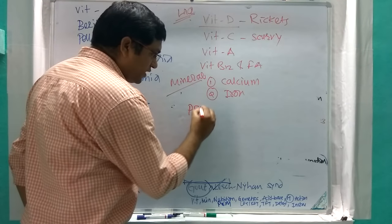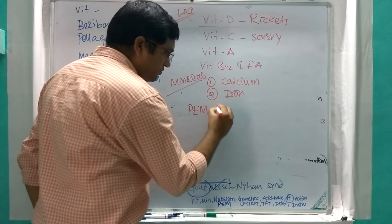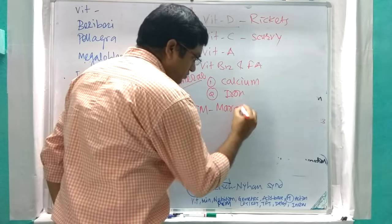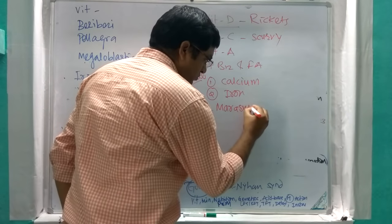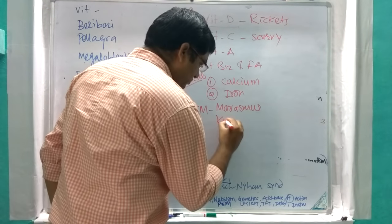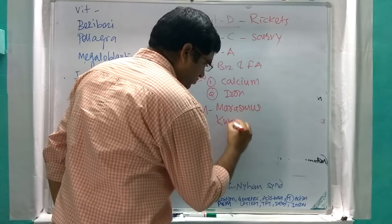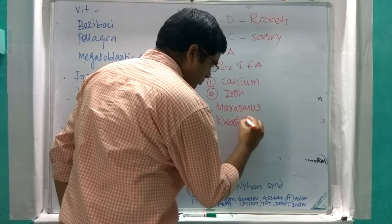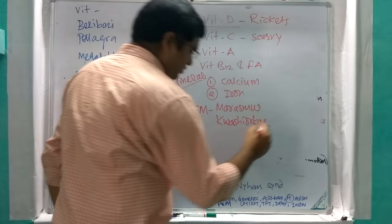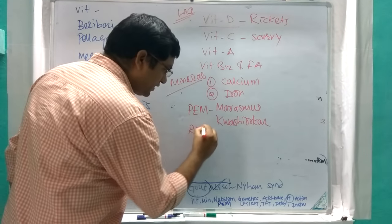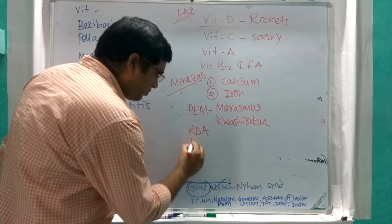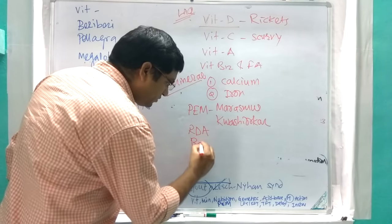In nutrition, read about protein energy malnutrition — that is marasmus and kwashiorkor. Also read about RDA (Recommended Dietary Allowance) and balanced diet.